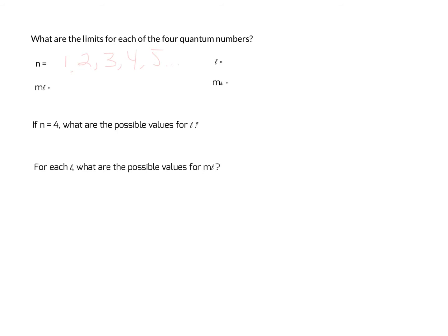l is known as the angular momentum quantum number. It starts at 0 and could go up to 1, 2, to whatever n minus 1 is.